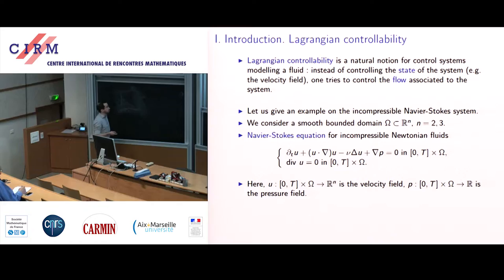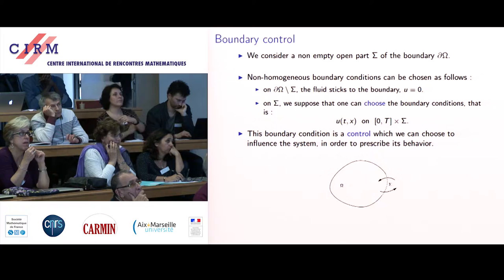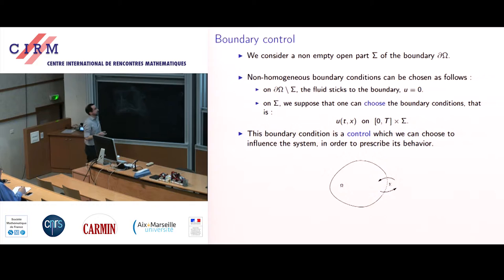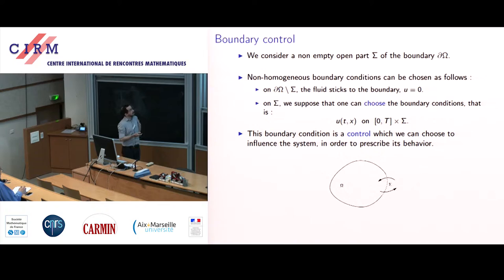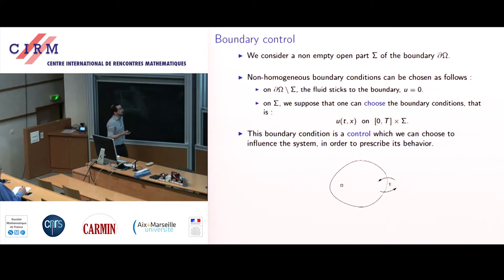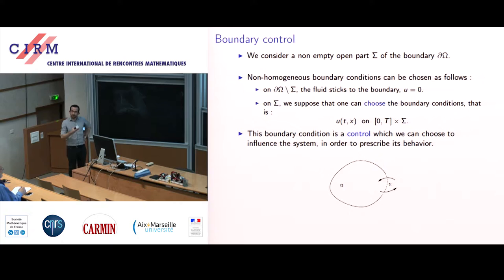Let's say you consider the boundary control system associated to this equation. You single out a part of the boundary, let's say sigma, which is the control zone — the place where you can have an influence on the fluid. You can prescribe the boundary conditions on sigma. On the rest of the boundary, you cannot do anything, and you put the usual Dirichlet boundary condition there.